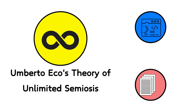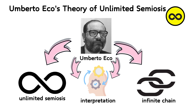Umberto Eco's Theory of Unlimited Semiosis. Umberto Eco, an Italian semiotician and novelist, introduced the concept of unlimited semiosis, which posits that the interpretation of a text or a sign can lead to an infinite chain of other interpretations. Each interpretation generates more signs and meanings, suggesting that understanding can never be fully complete or closed. This idea challenges the notion that texts have a single, fixed meaning that can be definitively uncovered.